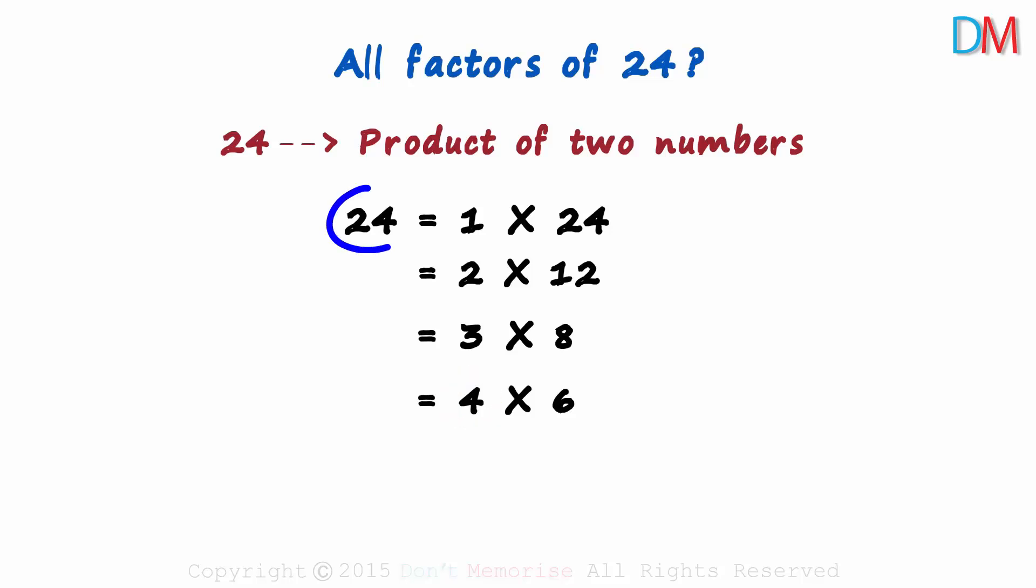Then 4. 24 is divisible by 4 and we wrote that product here. And after 4 we have 5. Is 24 divisible by 5? No it isn't. So we cannot write it as a product of 5 and another number.